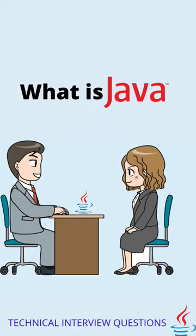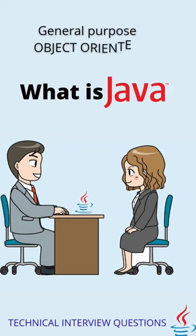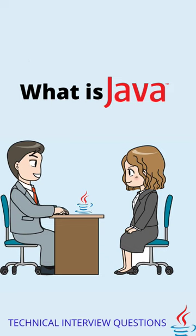My first question is: what is Java? Java is a general-purpose, class-based, object-oriented programming language. It is among the most used programming languages. It is considered as one of the fast, secure, and reliable programming languages preferred by most organizations to build their projects.